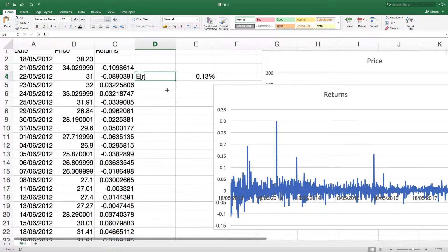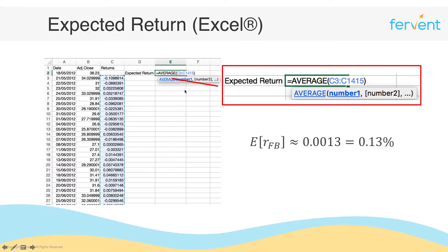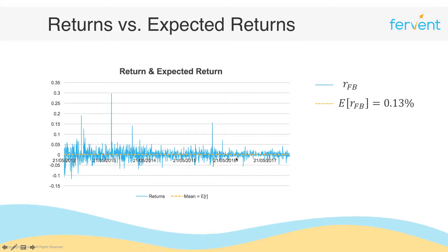So we know how to estimate the expected return, but how do we interpret it? What we're saying is that if you were to invest in Facebook, you could expect to earn 0.13% every day. This is our expectation, our prediction. How good is our expectation? Let's plot out the expected return. Clearly this is not great, because we expect to earn 0.13%, but there are days where we earn as high as around 30% and other days where we lose as much as around 12.5%. The returns realized by investing in Facebook are nowhere near the expectation of 0.13%.